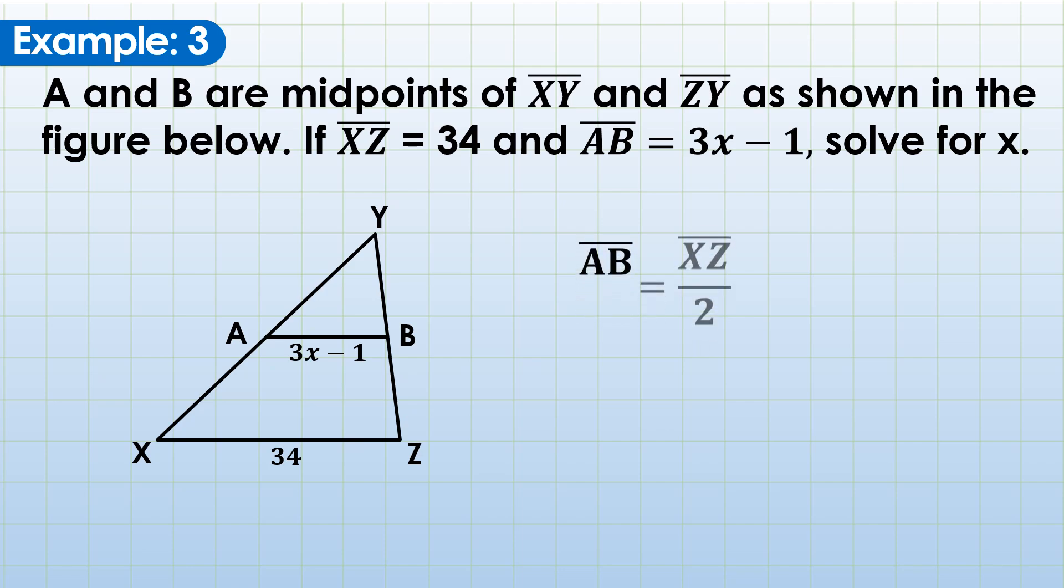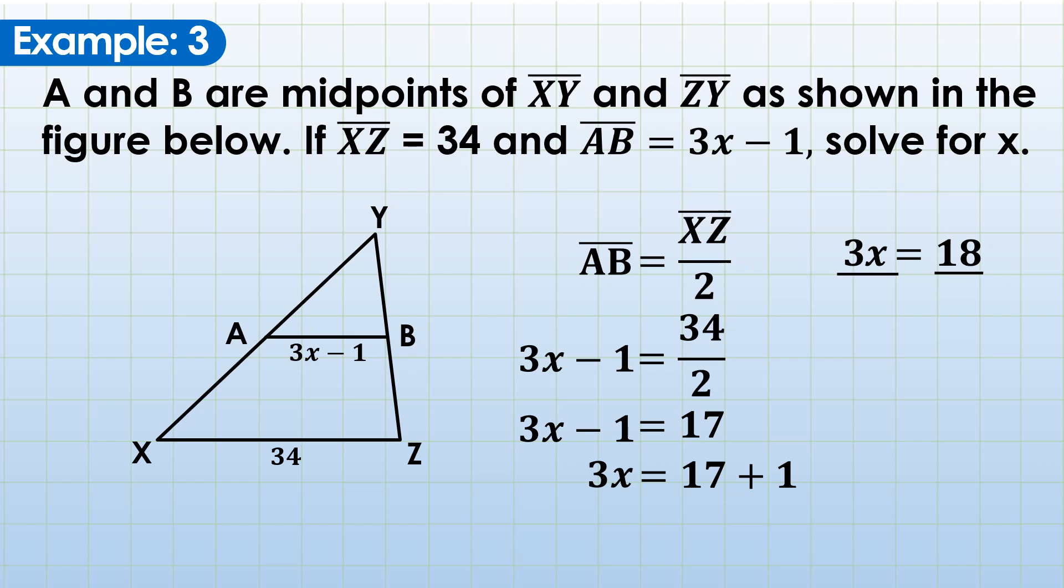Here, we can use the midline theorem, which gives us AB is equal to one half of XZ, or AB equals XZ over 2. Next is substitution. AB becomes 3x minus 1, and for the right side, we have 34 over 2. Next, we simplify the right side of our equation. 34 divided by 2 is 17. Next, linear equation. Add 1 on both sides of the equation, or simply transpose negative 1 to the other side. So this becomes 3x equals 17 plus 1, which becomes 3x equals 18. Divide both sides by the numerical coefficient of x, which is 3. x is now 6. And that's it, the value of x is 6.